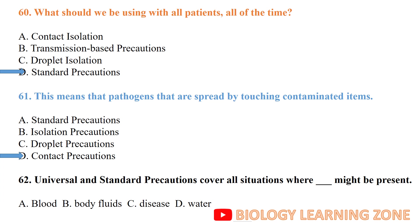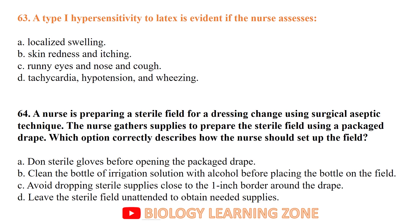Universal and standard precautions cover all situations where body fluids might be present. A Type 1 hypersensitivity to latex is evident if the nurse assesses tachycardia, hypotension, and wheezing. When setting up a sterile field for a dressing change, the supply wrapper should have a one-inch border around the drape.